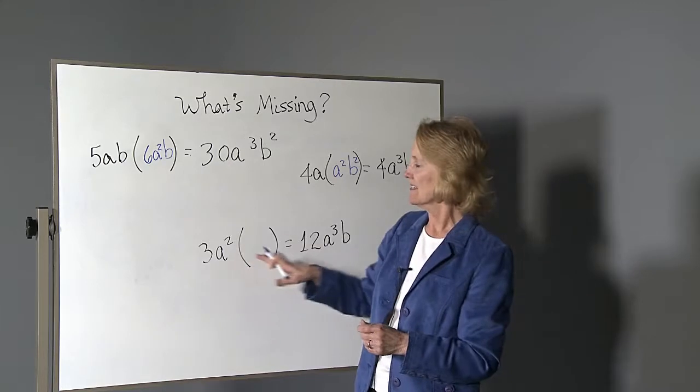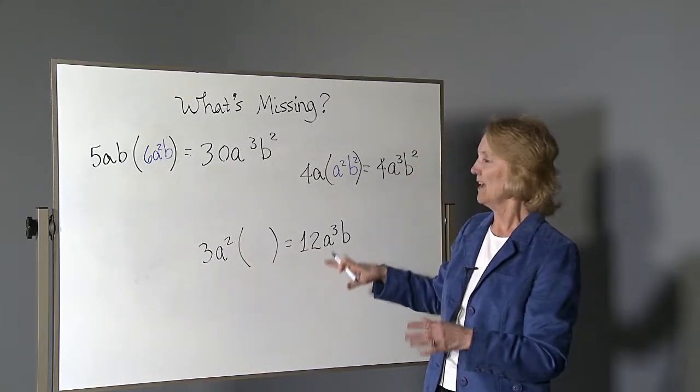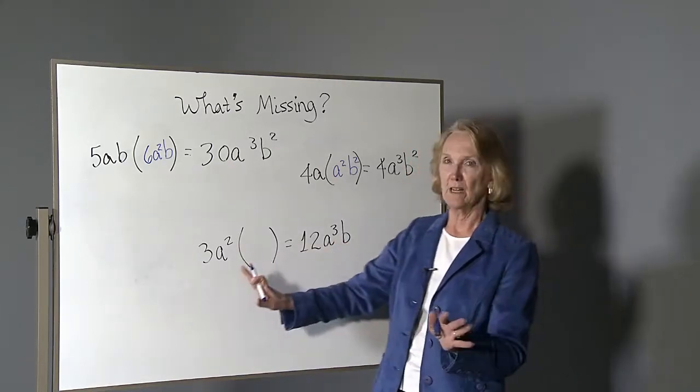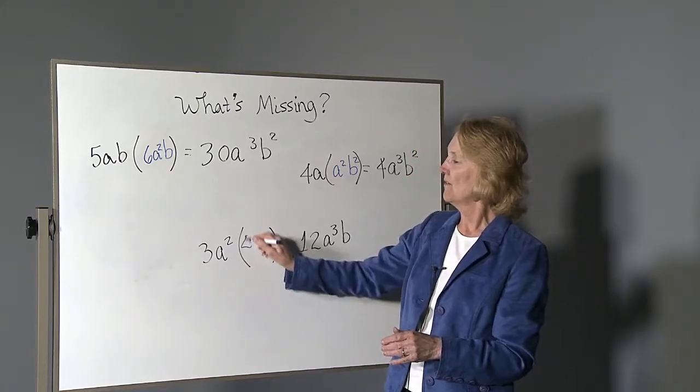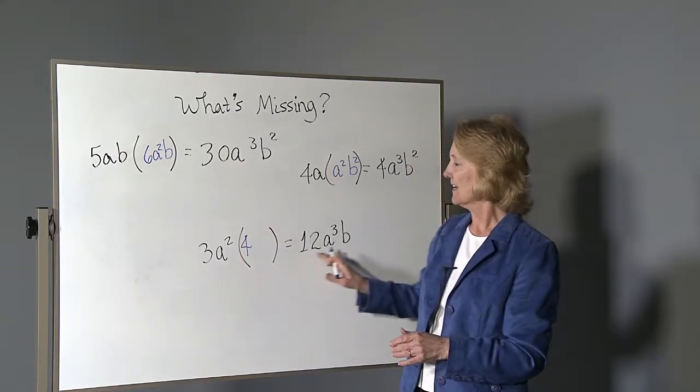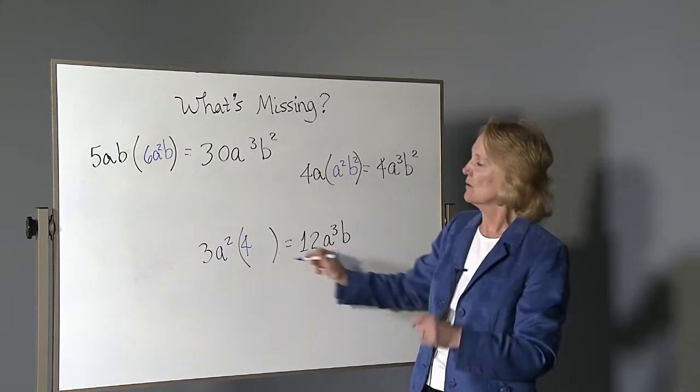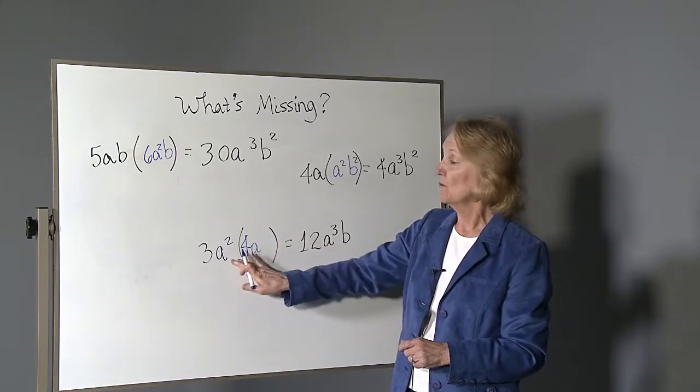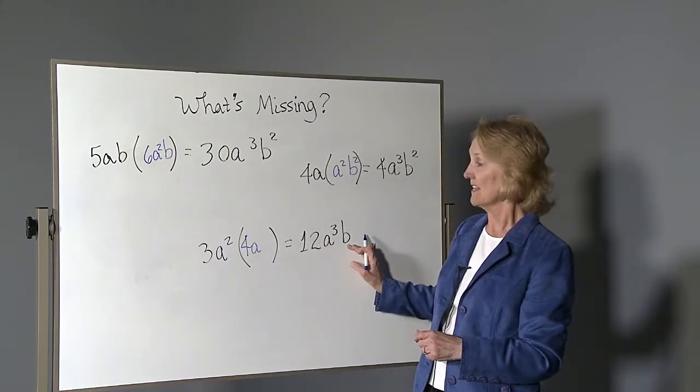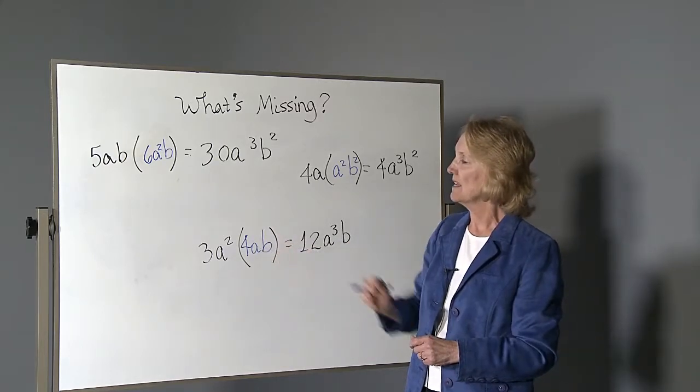This one, 3a to the second, and we need to get 12a to the third b. Do the numbers first. Three times what makes 12? Four. We have a to the second. We need a to the third. We just need one more a. We don't have any b's, but we need one in the answer, so it had to be in that factor.